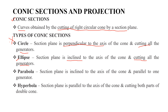The next conic is the Parabola. For the Parabola, the section plane is inclined to the axis of the cone and is parallel to the generator of the cone. This section plane inclined to the axis of the cone means we have cut a Parabola.